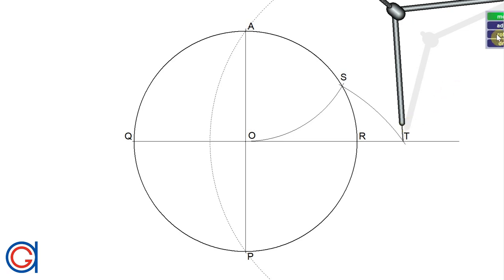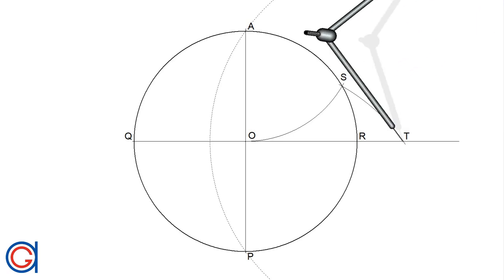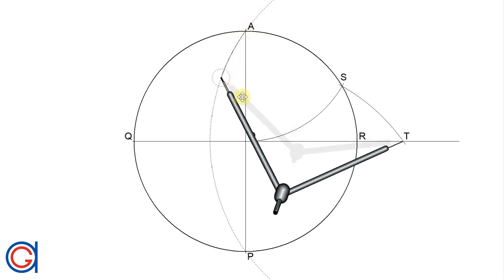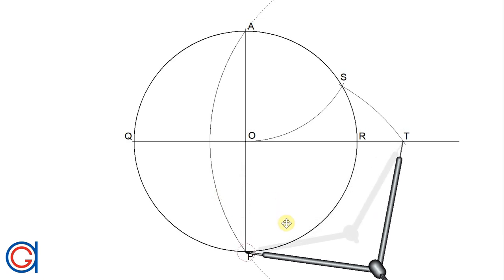So now with the same radius and setting our compass on the new point T, we scribe an arc to the left which goes through point A and point P, cutting our horizontal diameter at a new point which we will call U.